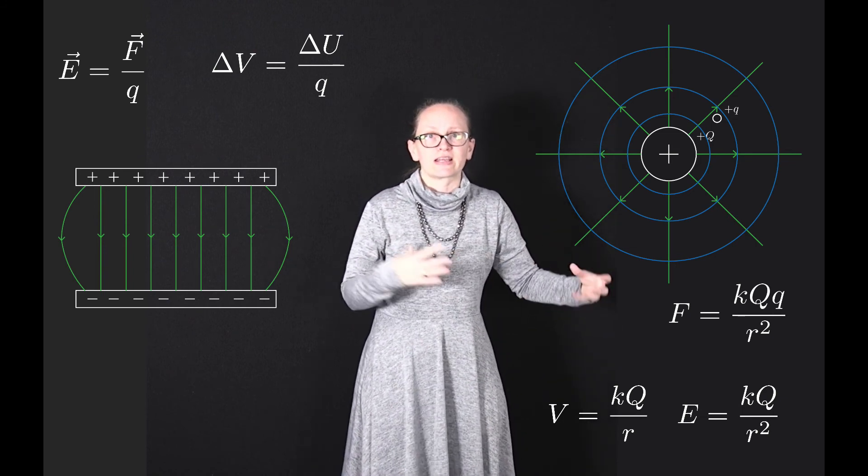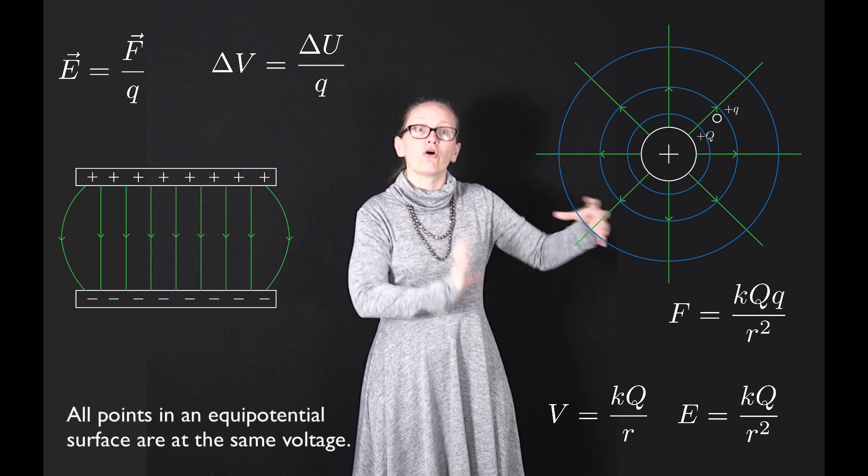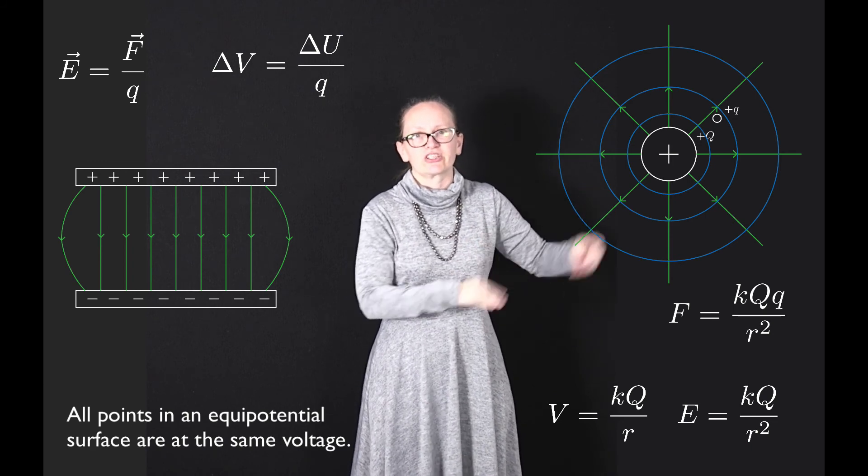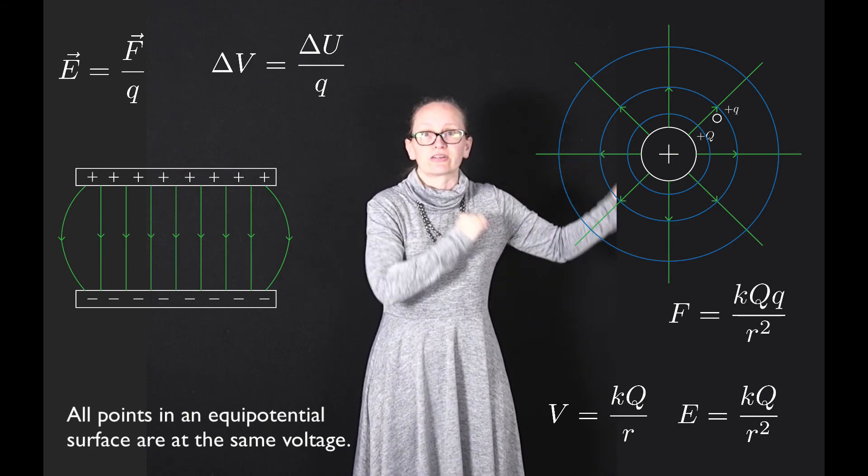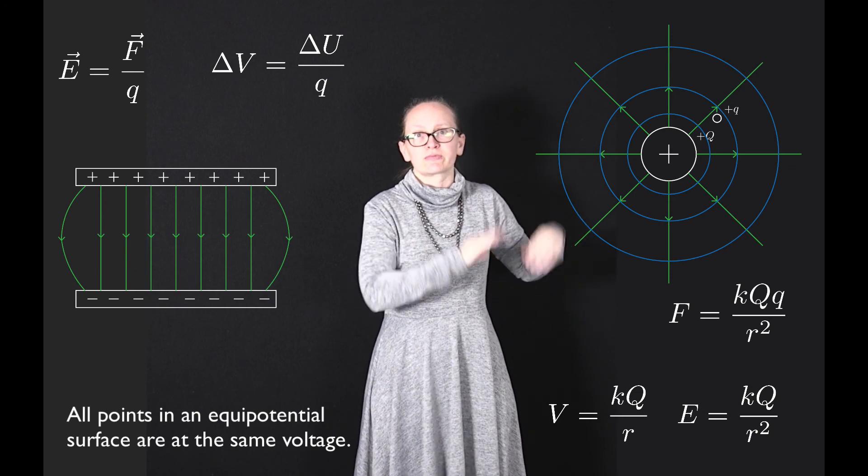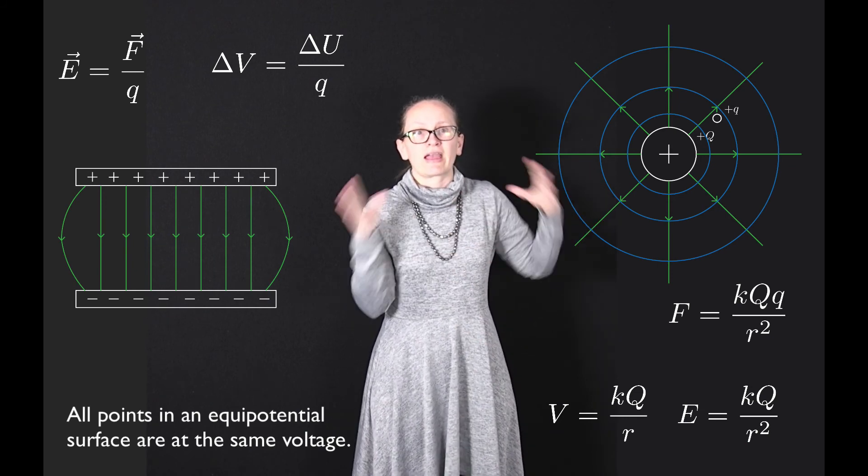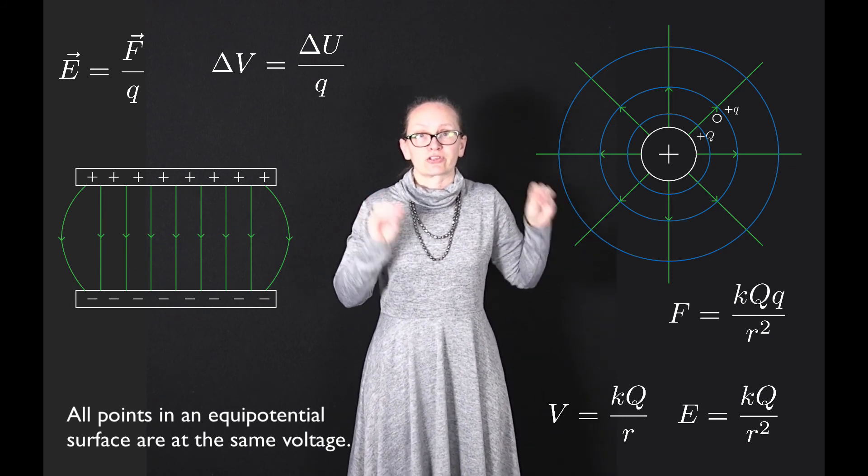An equipotential surface is a surface on which all points have the same voltage. It's much like joining the dots. If you join all the dots which have the same value of V, you end up with an equipotential surface.